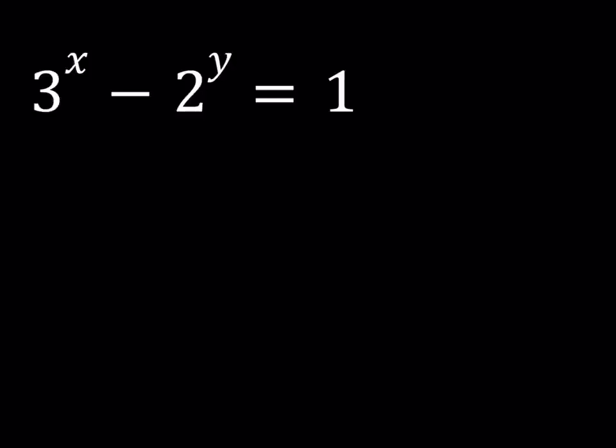We have 3 to the power x minus 2 to the power y equals 1, and the link for the book I'm going to share down in the description. So we're going to be finding integer solutions for this equation. How do you go about that?